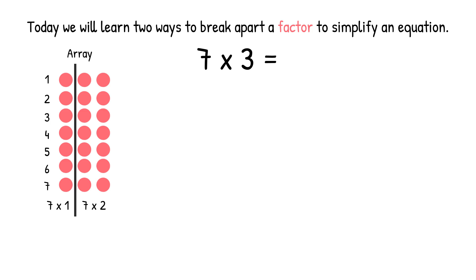The way we rewrite our equation with the two smaller equations is by using parentheses. The parentheses tell us that whatever is inside of those two parentheses, we have to do first. So now our new equation is parentheses 7 times 1, close the parentheses, plus parentheses 7 times 2, close the parentheses, equals.